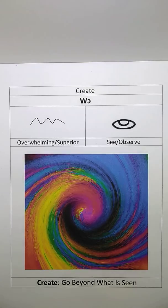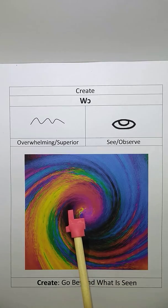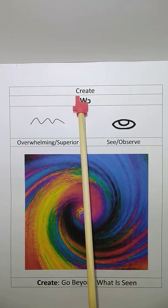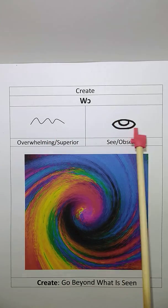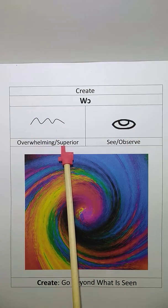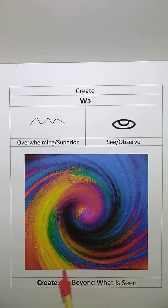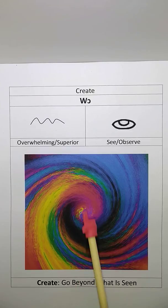Our previous lesson, part 1, was about the verb to create. If you decrypt it, you will see the wa and the o. To create in ancient Hebrew is wa. It is made of these two symbols, the wa and the o. The wa means superior or overwhelming, and the o means to see or to observe. Therefore, to create means to go beyond what is seen, and creativity requires going beyond what already exists, what already is.